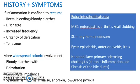For the history and symptoms, disease confined to the rectum may present with rectal bleeding, bloody diarrhea, discharge, increased frequency, urgency of defecation, and tenesmus. More widespread colonic involvement presents with bloody diarrhea, dehydration, electrolyte imbalance, and systemic symptoms. Extraintestinal features include MSK involvement, arthritis, erythema nodosum, episcleritis, anterior uveitis, iritis, and hepatobiliary involvement such as primary sclerosing cholangitis.